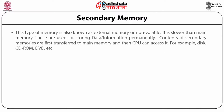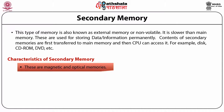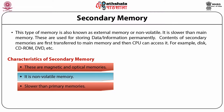Secondary memory is also known as external memory or non-volatile or permanent storage. It is slower than main memory but is used for storing data or information permanently. The contents of secondary memory are transferred to main memory for the CPU to access. Examples include disk, CD-ROM, DVD, and hard disk. Secondary memory uses magnetic or optical technologies and is non-volatile.